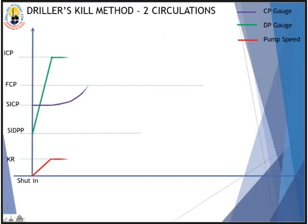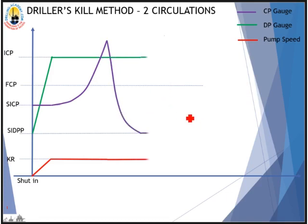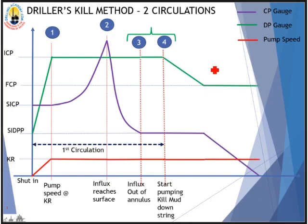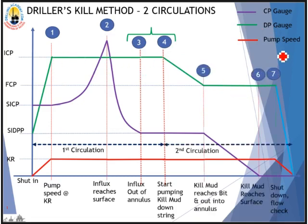As we know, there are two circulations in the Driller's Method. These graphs over here are showing you the pressure development and progress on the casing pressure gauge and drillpipe pressure gauge, in accordance with the choke control and the pump speed. The casing pressure gauge is in the purple graph, the drillpipe pressure gauge is in the green graph, and the pump speed is in the red graph.